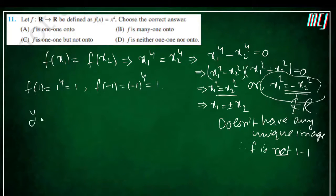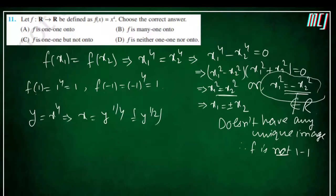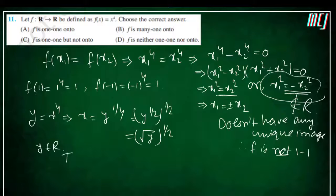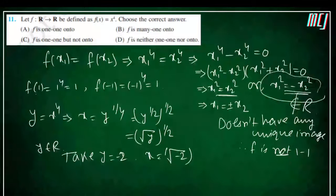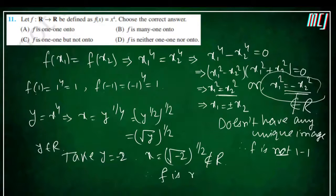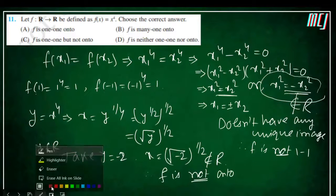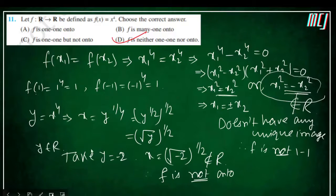Now we check onto. y = x⁴ gives x = y^(1/4). If y = −2, then x = (−2)^(1/4) = (√(−2))^(1/2), which does not belong to real numbers. Therefore f is not onto. Since f is neither one-to-one nor onto, option D is the correct answer.